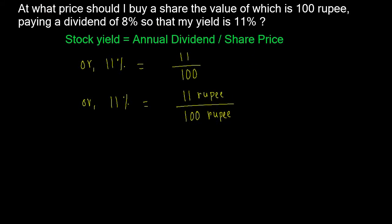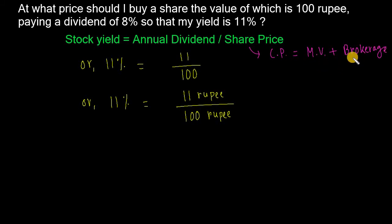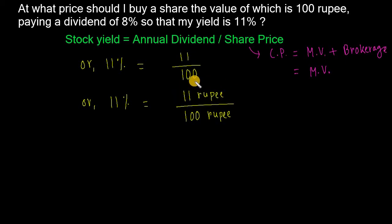From the formula, share price equals annual dividend divided by stock yield. So market value equals share price. The cost price equals market value less brokerage. Market value equals annual dividend divided by yield — 11 rupee dividend, market value 100 rupee.